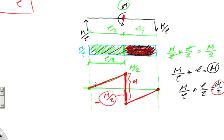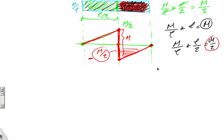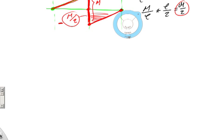Someone might say this looks like magic, but it isn't. Let me show this in another way to confirm that the bending moment in the second half of the beam is indeed negative.